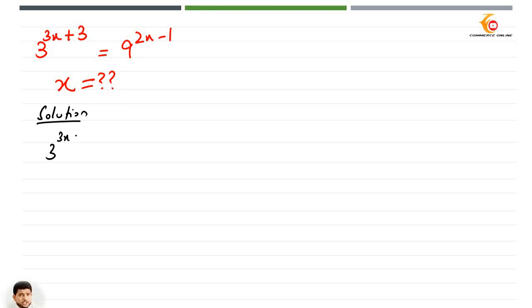3 to the power 3x plus 3 equals 9 to the power 2x minus 1.